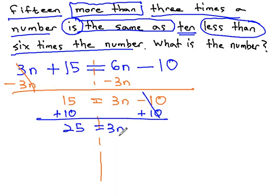And finally dividing both sides by 3 to give us n, our variable, our unknown number, to be 25 thirds.